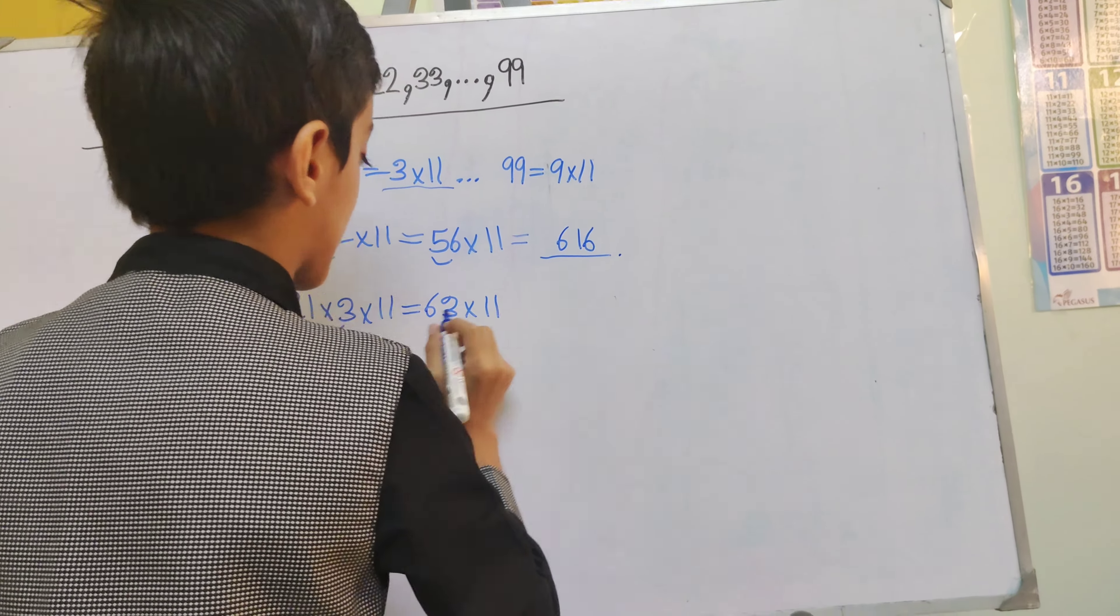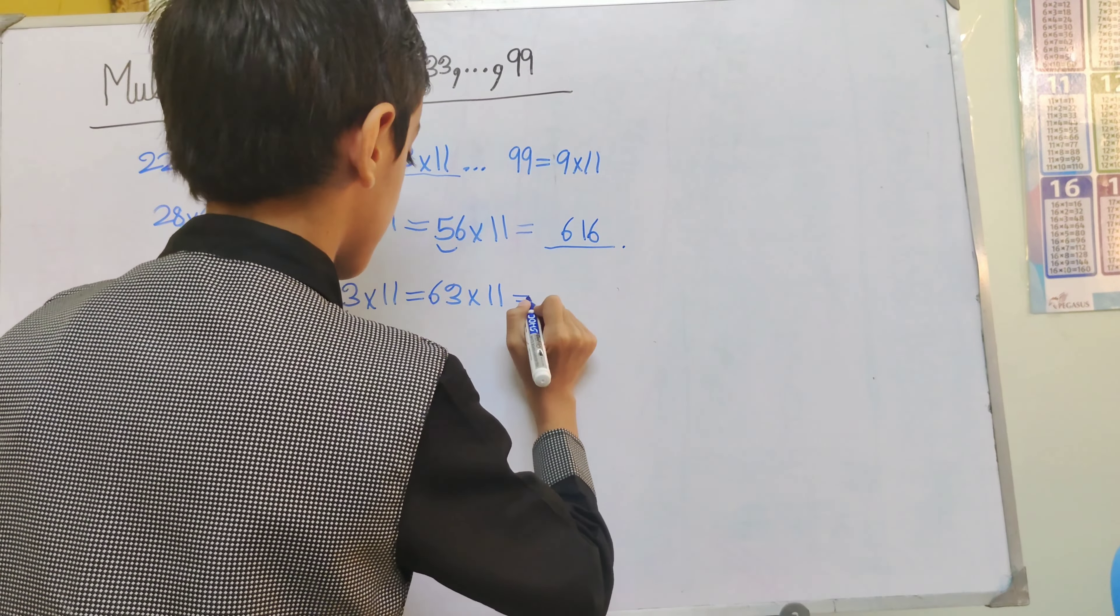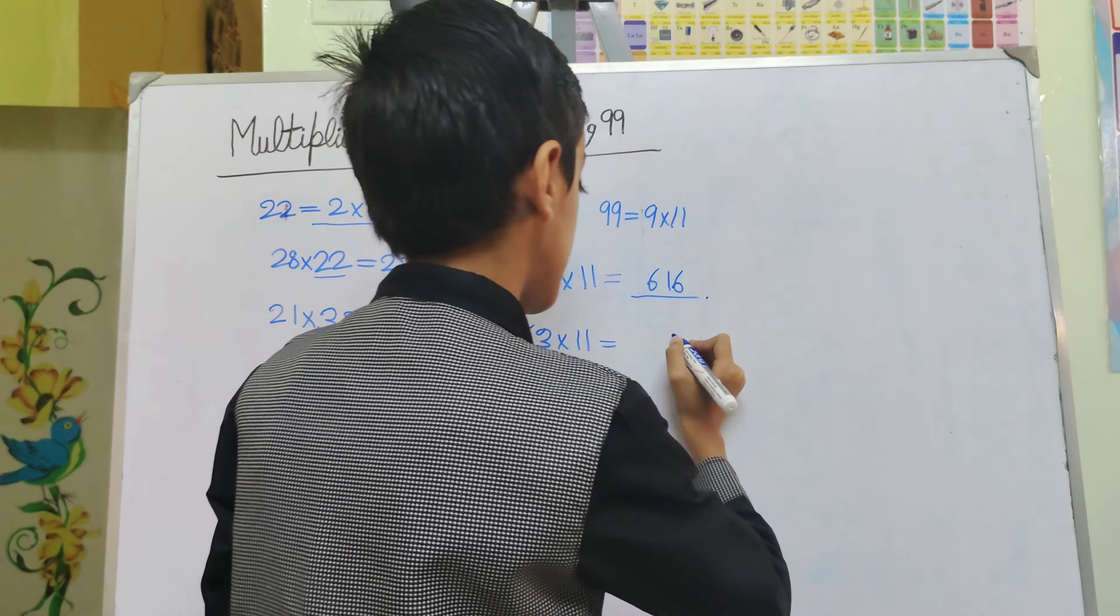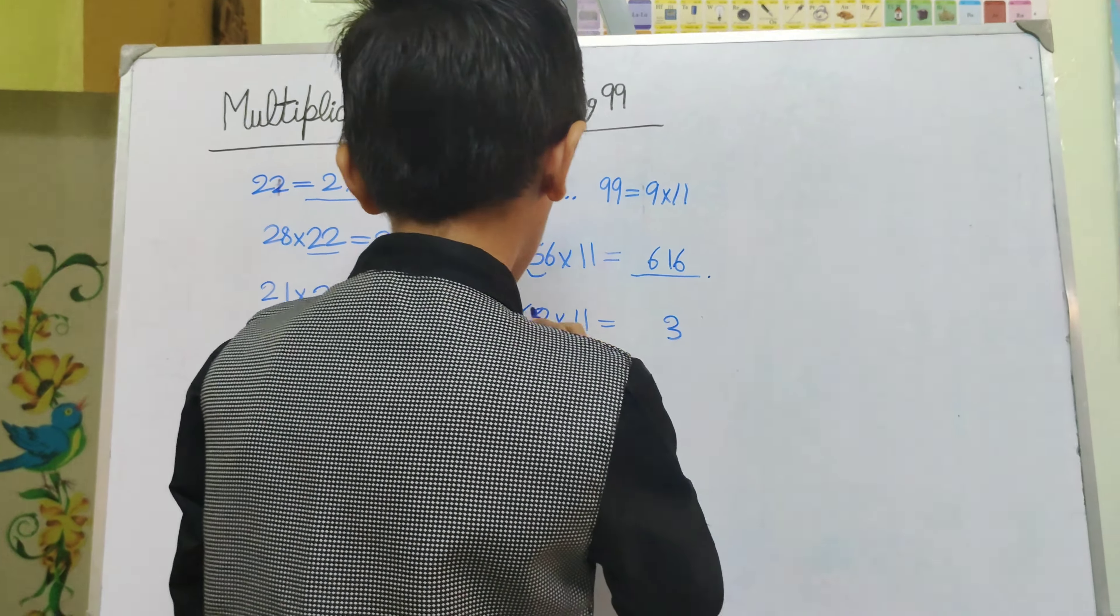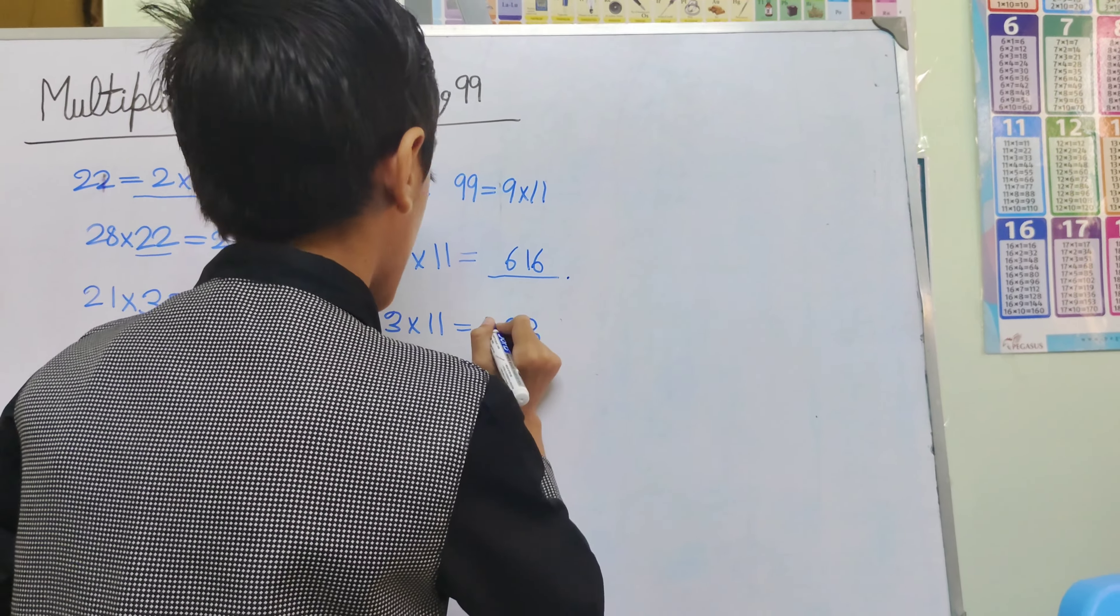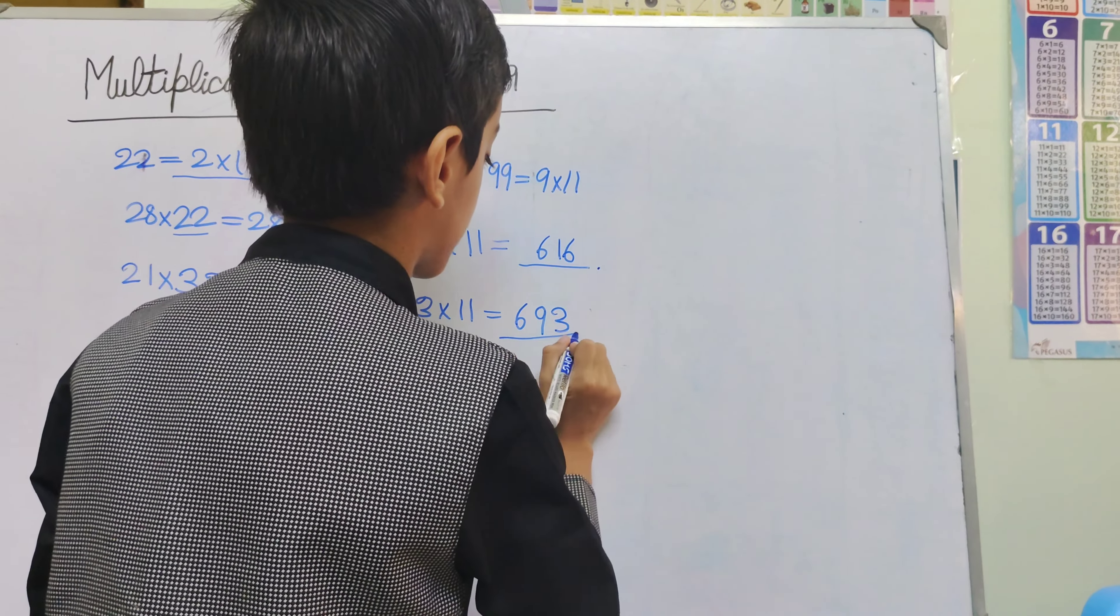Then, we will multiply by 11. Multiplying by 11 means adding to the adjacent number. Keep the units digit as it is, 3. Then 6 plus 3 is 9, and then 6 as is. So, 693 is your answer.